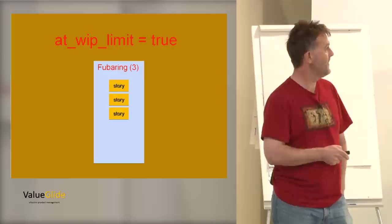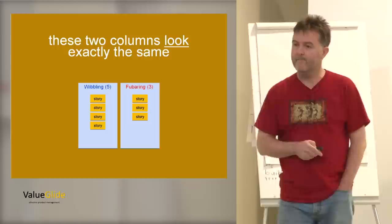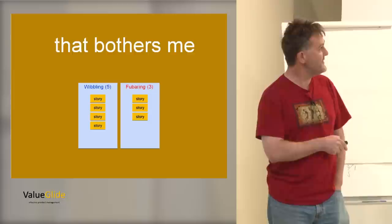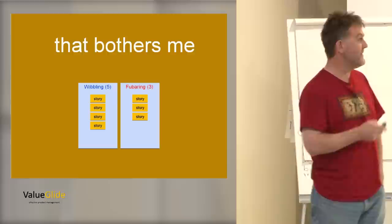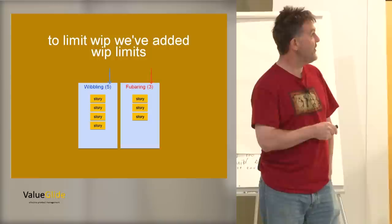So let's look at this and I'll try and explain why I was worried by this. Here's the same setup we had as before. Four stories. Wibbling column limit five. Four is five. No. So that's false. But here's another column. And this one has a limit of three. And there's one, two, three stories. So are we at the work in progress limit for this column? The answer is yes, we are. So there they are, the two columns together. This one, no, it's not at its limit. This one, yes, it is at its limit. There they are. And they look the same. This bothers me.